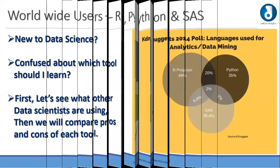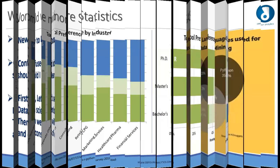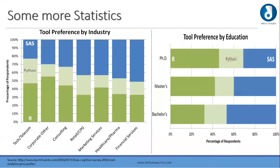These statistics show tools preferred by industries such as telecom, corporate, consultants, retail, marketing, health, and financial services. In the telecom sector, R is used by 45%, compared to SAS at 15% in the financial sector. Python is equally used across each and every industry.